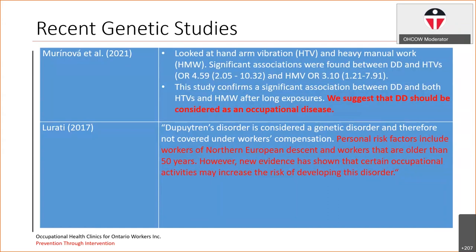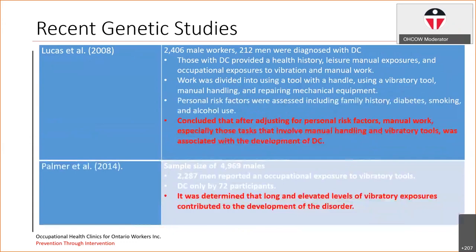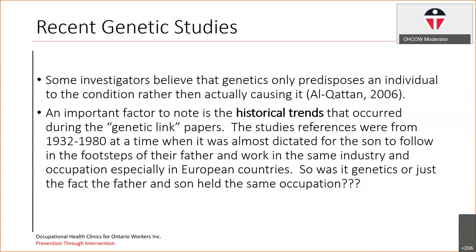Muranova concluded that 'we suggest that Dupuytren's disease should be considered as an occupational disease.' Lirati in 2017 stated that personal risk factors include workers from Northern European descent and workers older than 50 years, however new evidence has shown that certain occupational activities may increase the risk of developing these disorders. Lucas concluded that after adjusting for personal risk factors, manual work — and especially tasks involving manual handling of vibratory tools — there was an association with the development of Dupuytren's Contracture. Palmier concluded that long and elevated levels of vibratory exposure contributed to the development of this disorder.